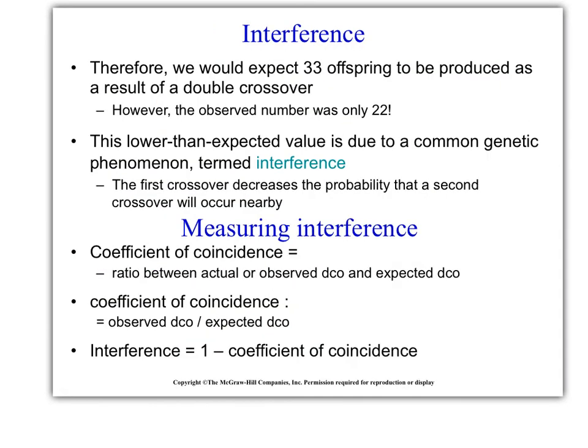In order to measure interference, we need to use something called the coefficient of coincidence, the ratio between the observed double crossover and the expected double crossover. The coefficient of coincidence, or COC, is observed over expected DCOs.